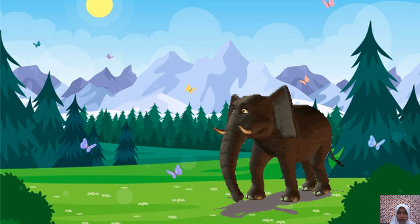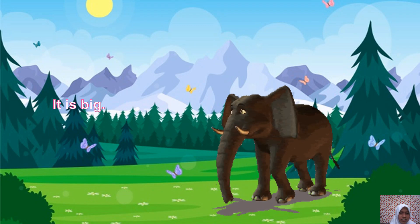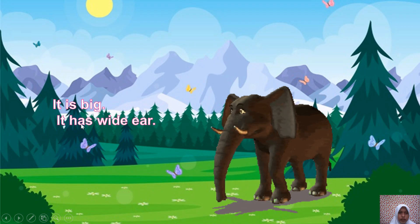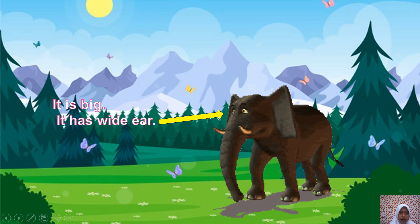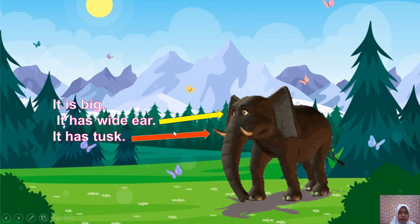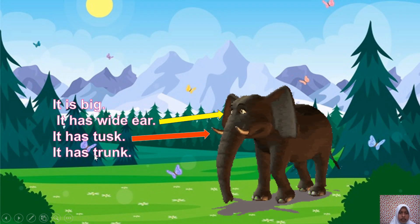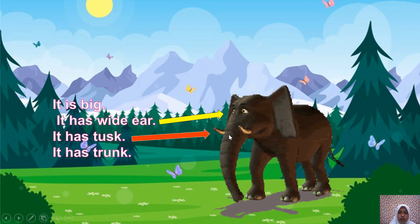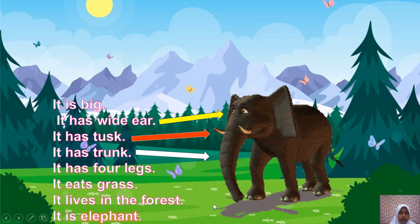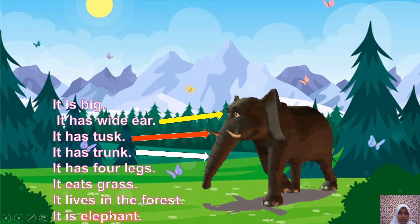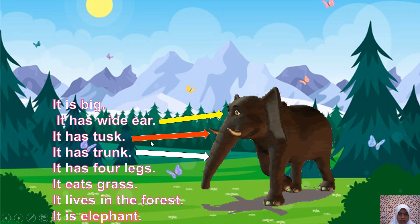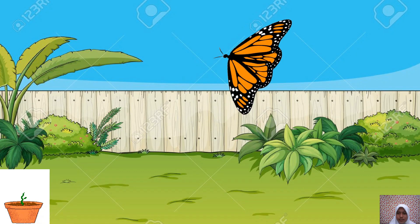Next, what animal is in the picture? It is an elephant. The characteristics are: it is big, it has wide ears, it has tusks, it has a trunk, it has four legs, it grazes, it lives in the forest. Tusk itu gading; trunk itu belalai. So when you see the characteristics: it has wide ears, tusks, and trunk — itu berarti it is an elephant.